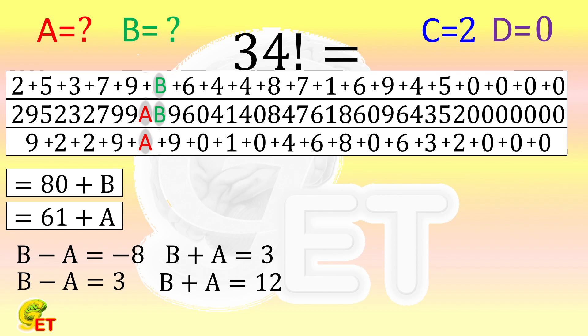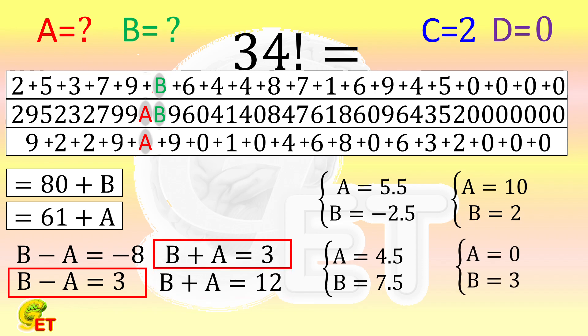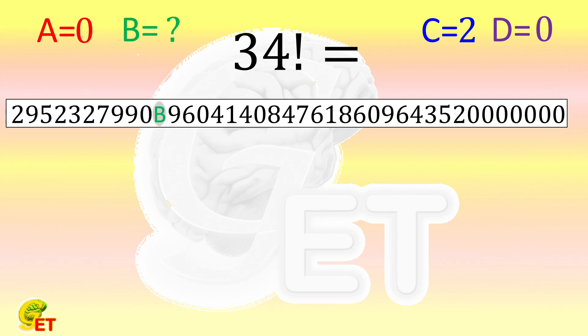By choosing any pair from the conditions of B minus A and B plus A, we can get a set of solutions. They are: A equals 5.5 and B equals minus 2.5, A equals 10 and B equals 2, A equals 4.5 and B equals 7.5, as well as A equals 0 and B equals 3. Obviously, only one pair of those results can be decimal numbers. That is, A equals 0 and B equals 3.